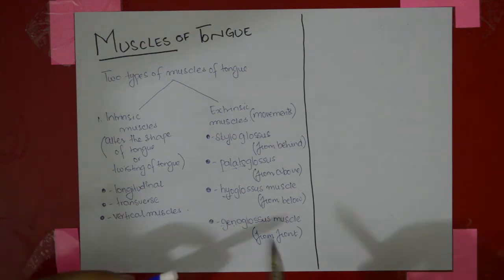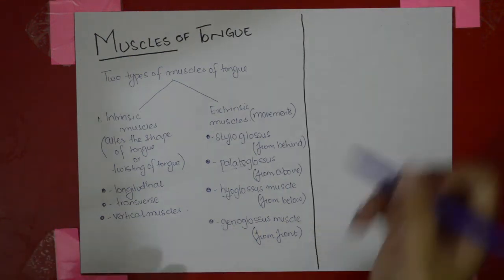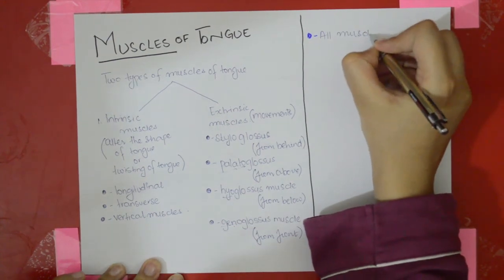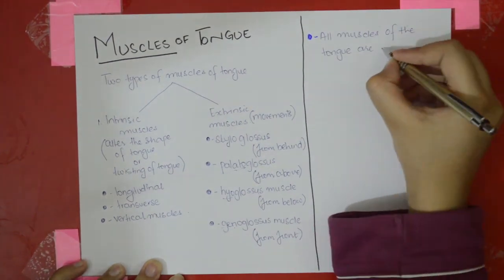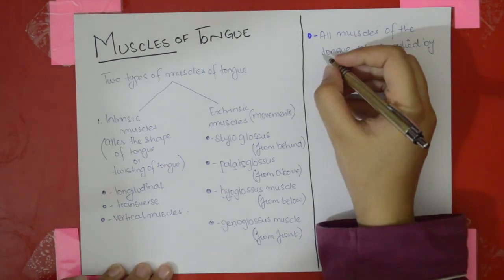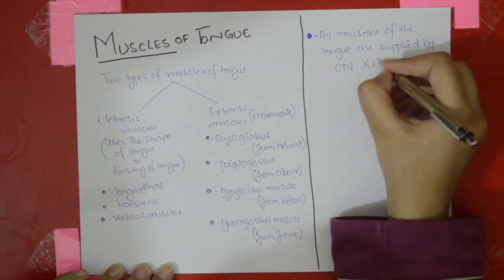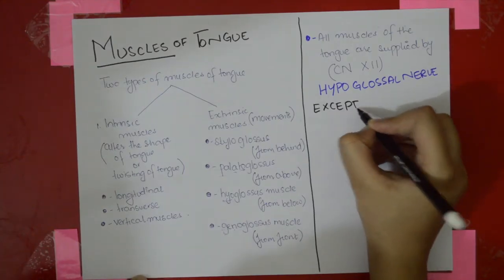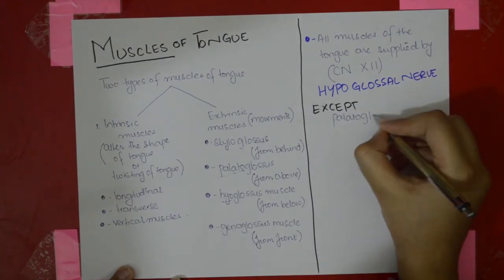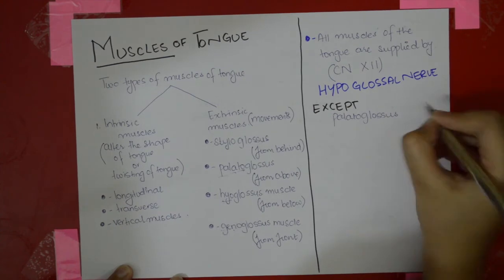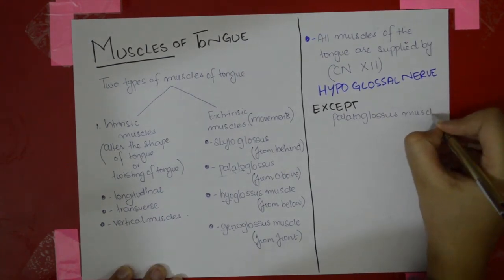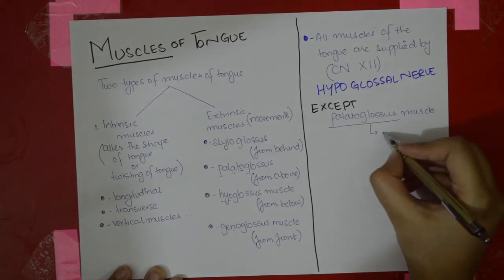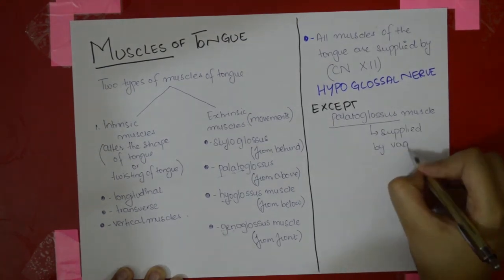Now let's do the nerve supply. You need to know that all muscles of the tongue are supplied by cranial nerve 12, the hypoglossal nerve, except the palatoglossus muscle, which is supplied by the vagus nerve.